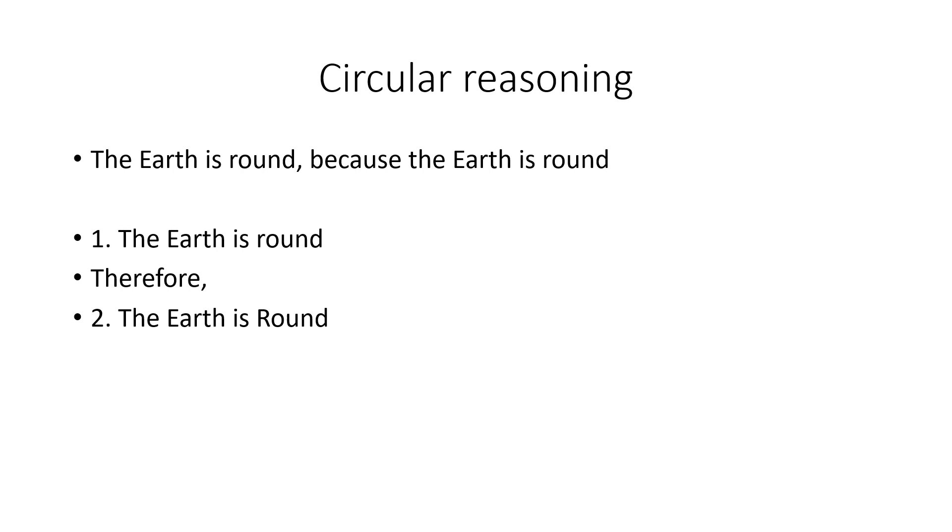Now, if we check that it's valid, if it's the case that the earth is round, it has to be the case that the earth is round. So, it's valid. The premise, the earth is round, is true. The earth is round. So, we've got a true premise, and we have a valid argument. So, it's a sound argument.